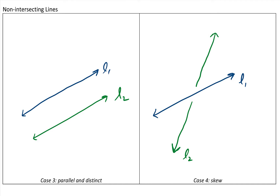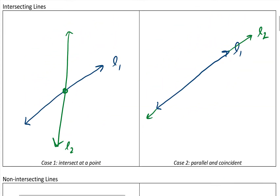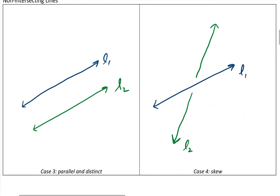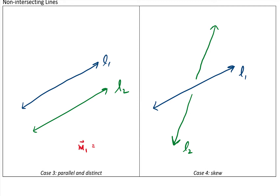Some of these cases can be determined just by looking at their direction vectors. For lines intersecting at a point, the direction vectors must be non-collinear — there is no constant by which you can multiply the direction vector from line two to get the direction vector from line one. For parallel cases, you can find a scalar multiple relating the two direction vectors. The same applies for parallel and distinct lines. For the skew case, there will be no scalar multiple for the direction vectors. Looking at direction vectors will guide us to what type of answer we're looking for.